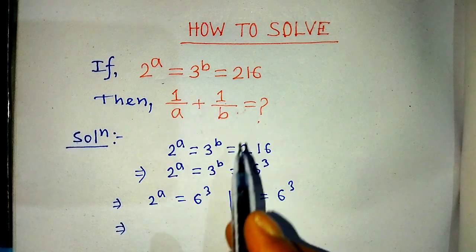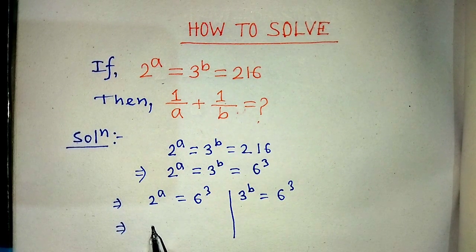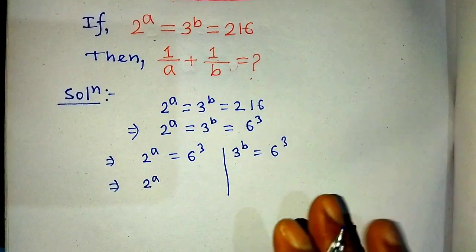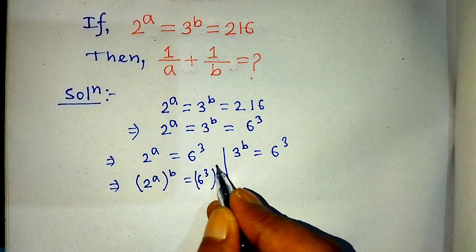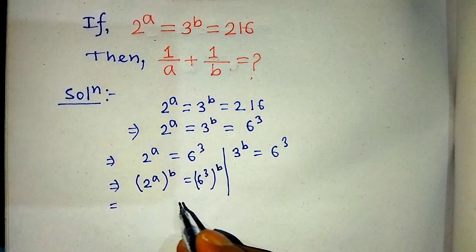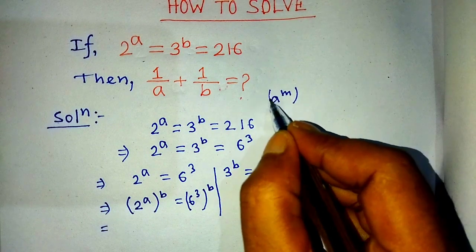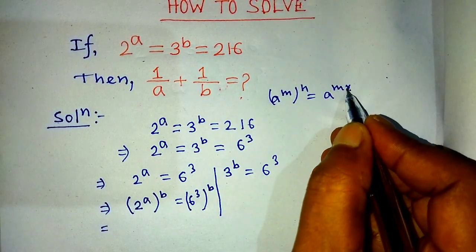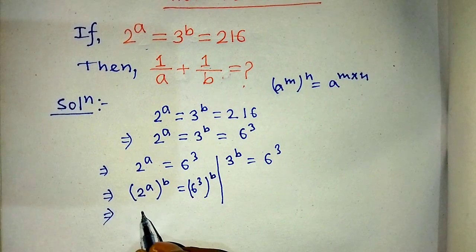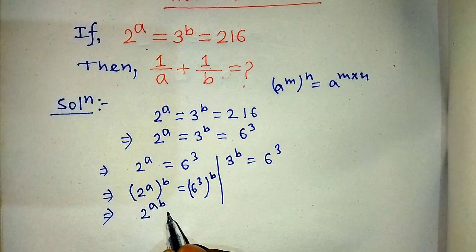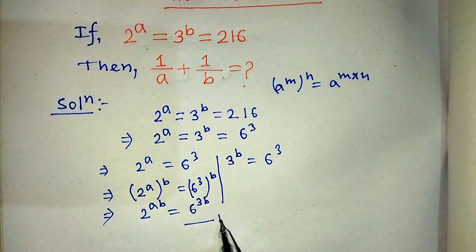To find the value of these algebraic expressions, we take power B on both sides of the first equation: 2 to the power A, whole to the power B, is equal to 6 to the power 3, whole to the power B. Applying the formula (A^M)^N = A^(M×N), we get 2 to the power AB is equal to 6 to the power 3B. This is equation number 1.